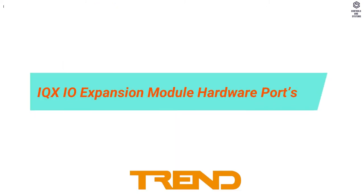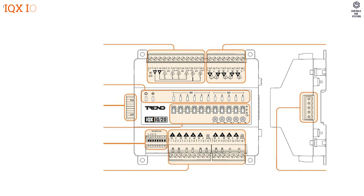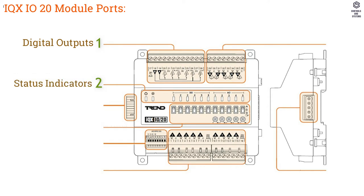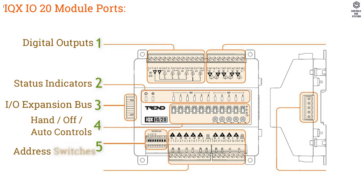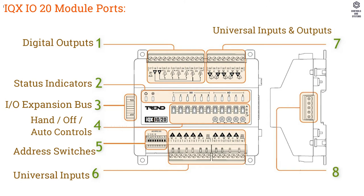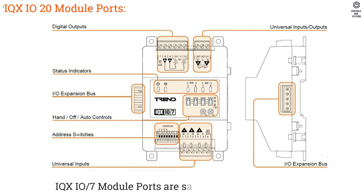IQXIO Expansion Module Hardware Ports — IQXIO 20 Module Ports: 1. Digital Outputs, 2. Status Indicators, 3. IO Expansion Bus, 4. Hand/Off/Auto Controls, 5. Address Switches, 6. Universal Inputs, 7. Universal Inputs/Outputs, 8. IO Expansion Bus. The IQXIO 7 Module Ports are the same as the IQXIO 20 Module.